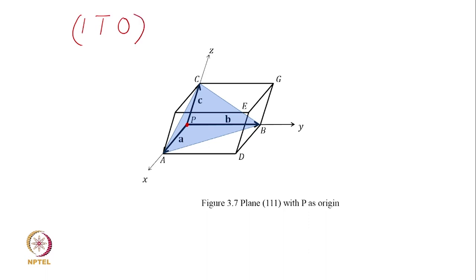So, include a 1 1 bar 0 plane in this, make this drawing and include 1 1 bar 0 plane, and then tell me what is the line of intersection, Miller indices of line of intersection.